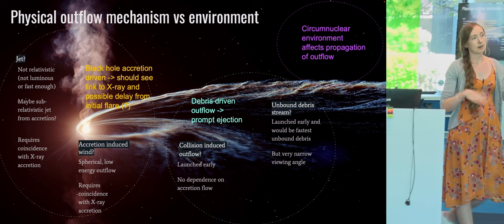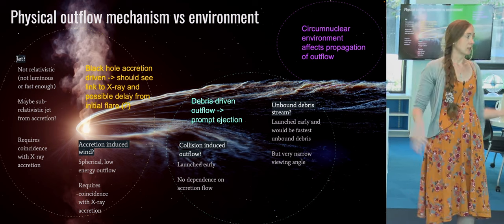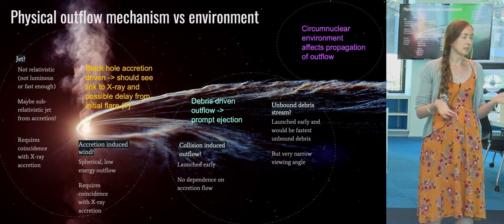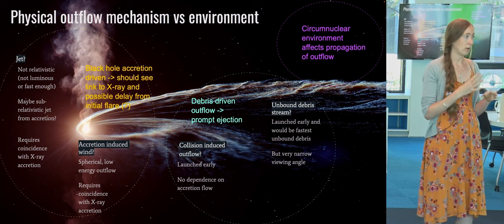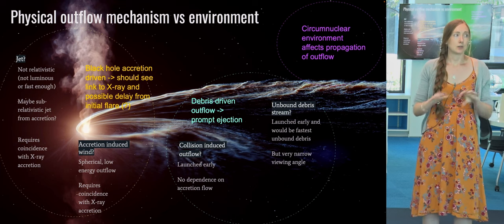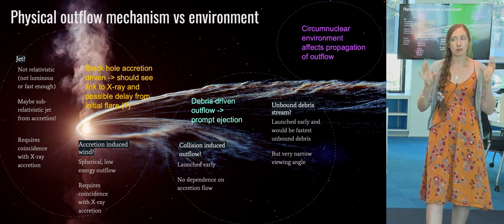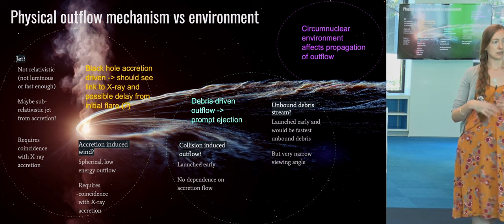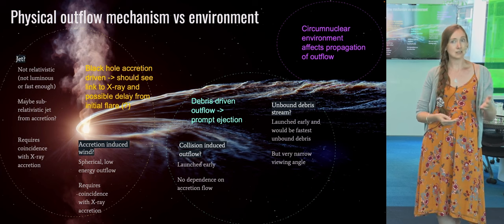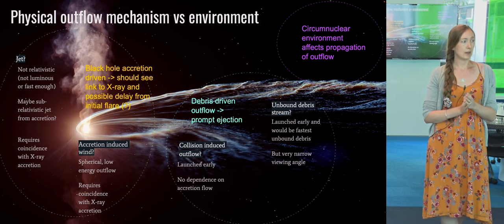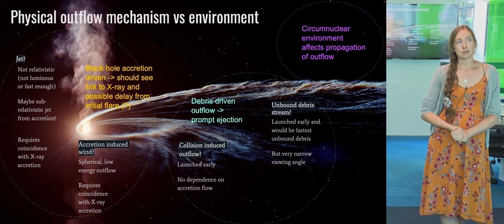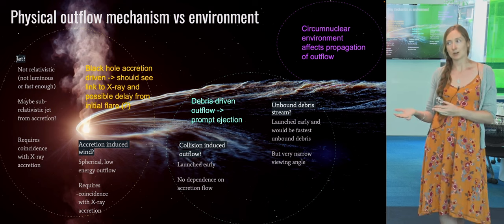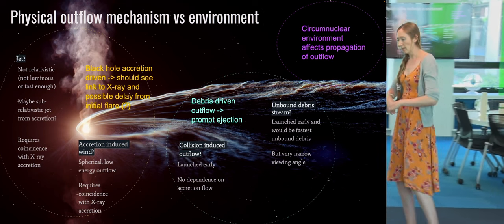An important thing to consider is that the stellar debris is not being ejected into a vacuum — it's being ejected into a galaxy. The central regions of galaxies are pretty dense; there's probably some gas depending on whether the black hole has been active in the past. This circumnuclear environment affects the propagation of the outflow, how long it takes to decelerate, and how energetic the shock is. A really dense circumnuclear environment drives a more energetic shock, producing brighter radio emission.